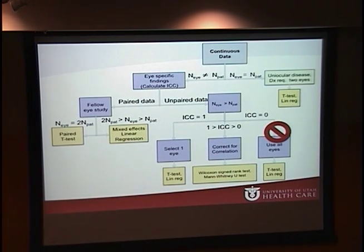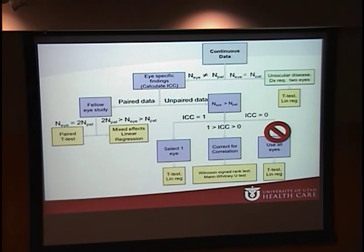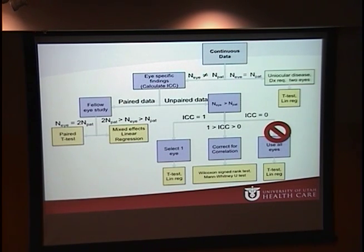The final scenario — and most common — is when the ICC is between zero and one. In this case, we correct for the correlation and use methods like the Wilcoxon signed rank test or the Mann-Whitney U test. This algorithm is somewhat generalized and leaves out some qualifying details, but it illustrates the correct flow of events for selecting an appropriate analytic method.